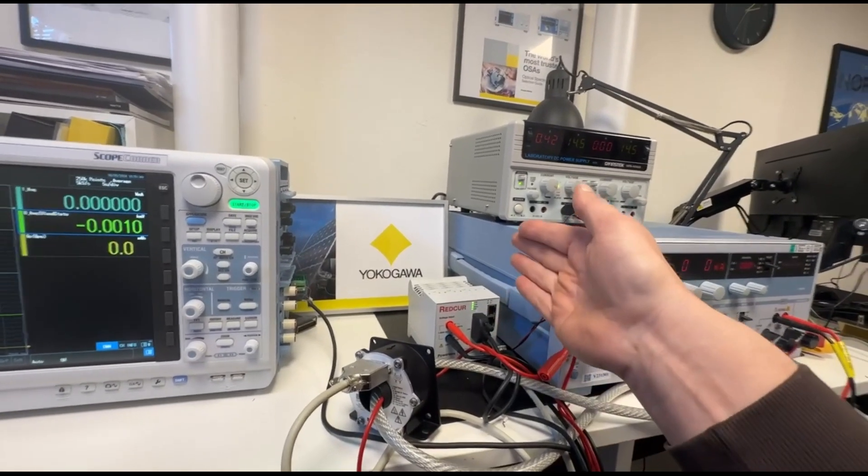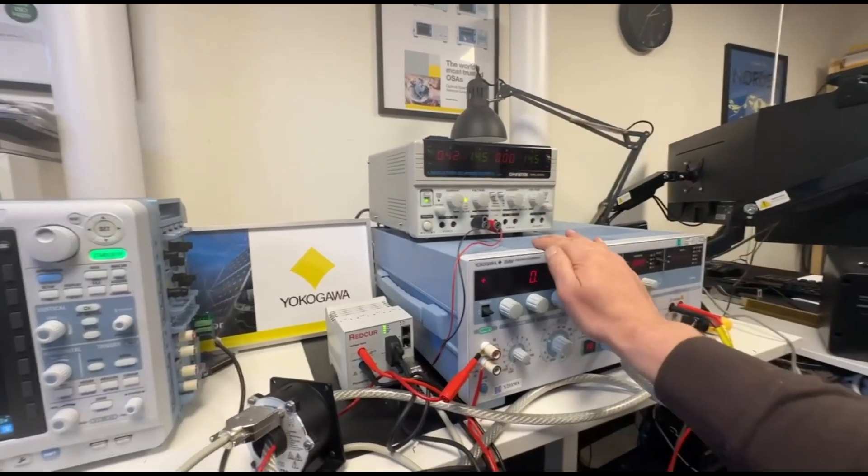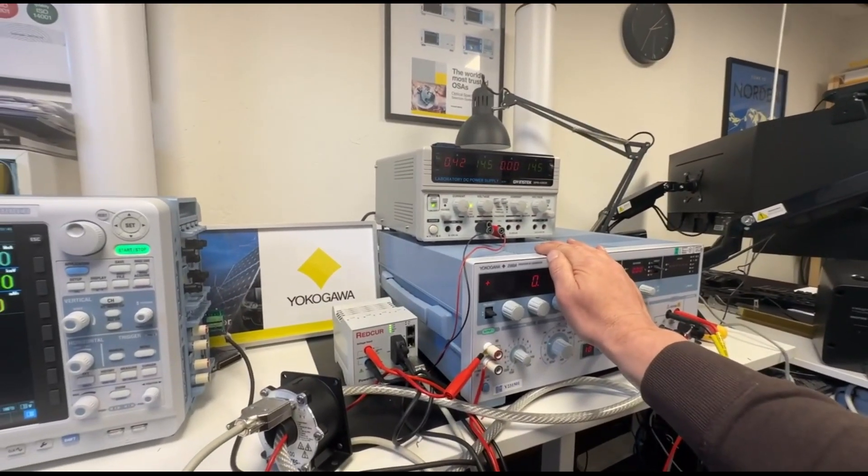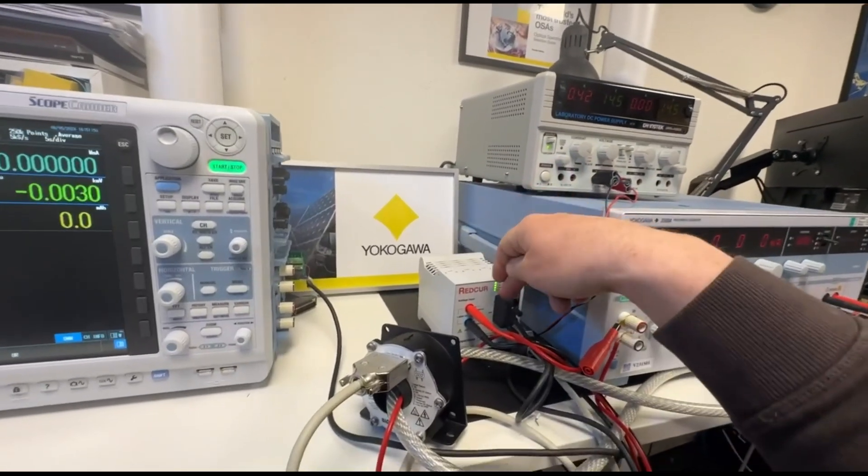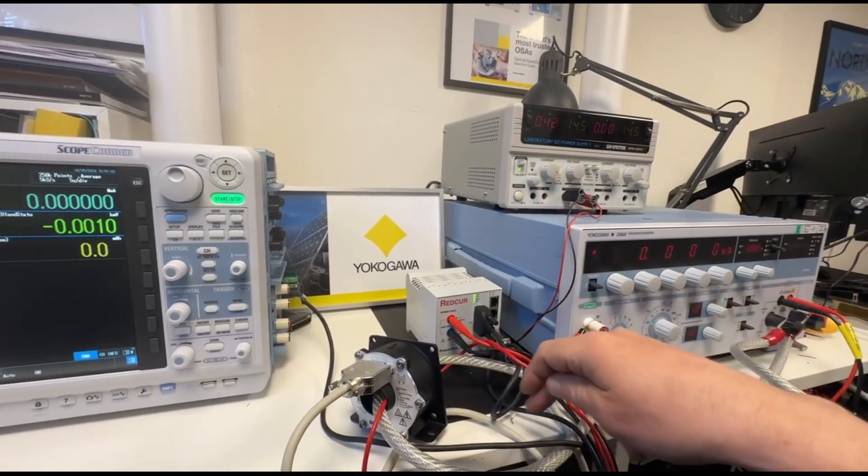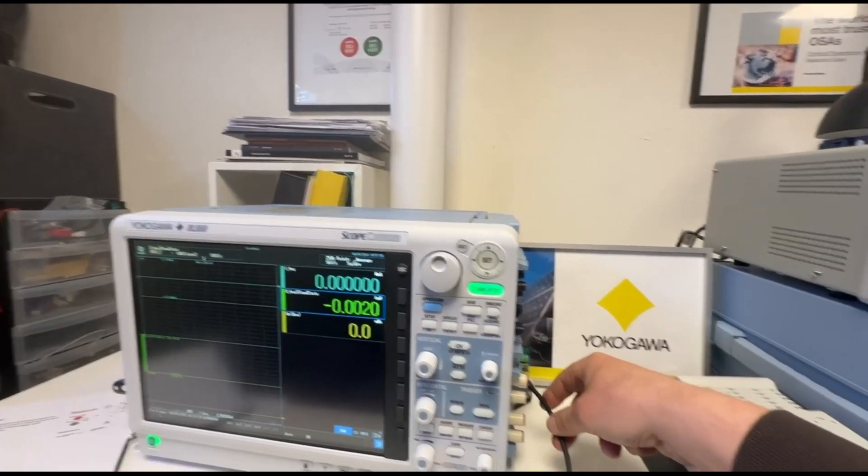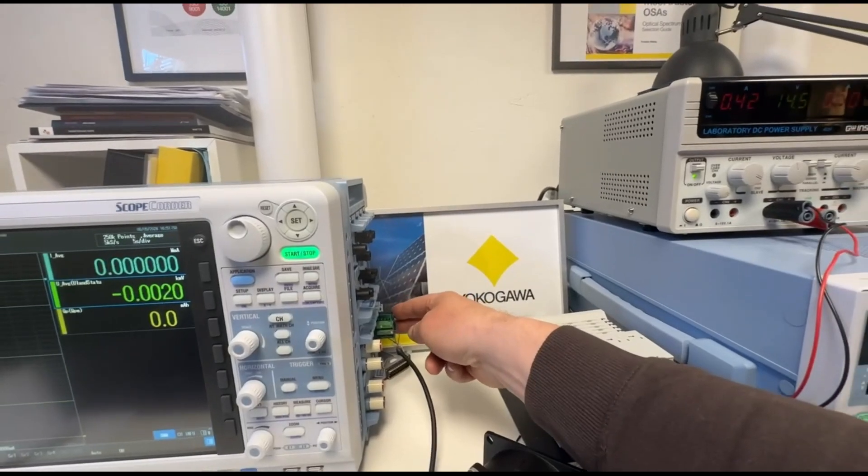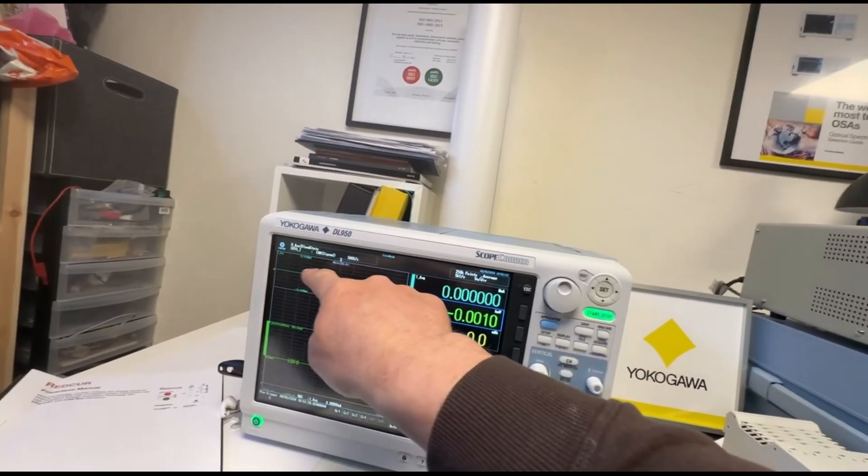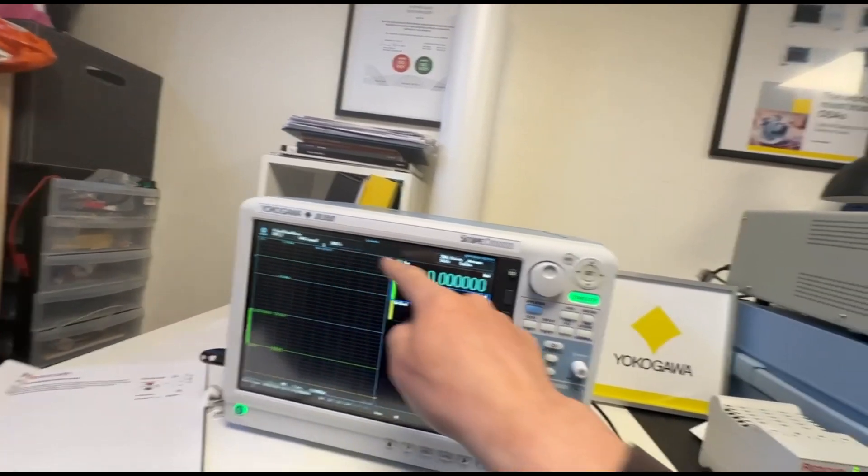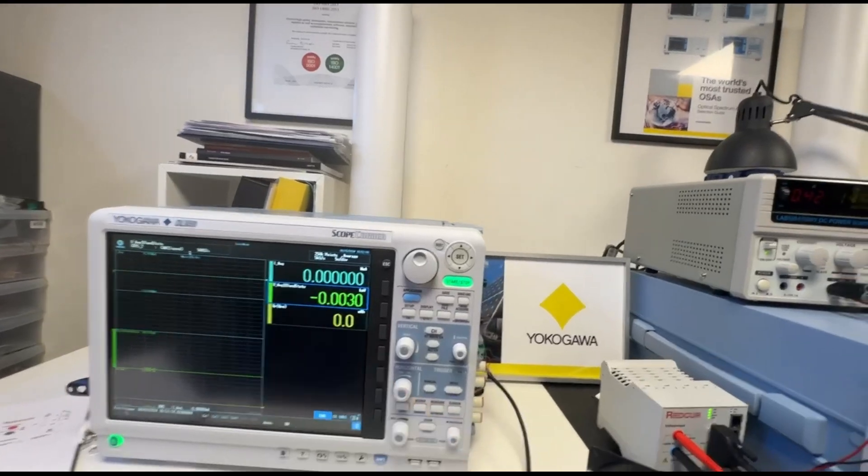In this case we are just for demonstration purposes using a DC calibrator as a source. We are measuring the current and the CAN is outputted into the Yokogawa DL950 scopecorder that can decode CAN messages and print them as waveforms and numeric. We're primarily looking at the numeric values here.